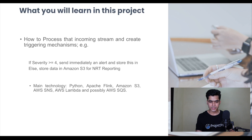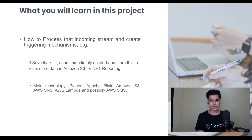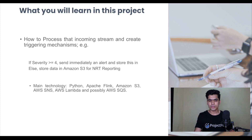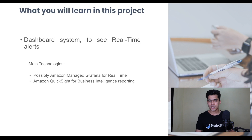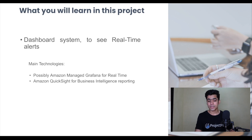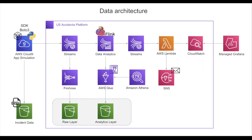S3 is an object store where you can store your data. AWS SNS is the Simple Notification Service — when something happens, you can get notifications by email or SMS. AWS Lambda is the event-based compute system where you write code that executes based on triggers or events. We may also use the Simple Queue Service. At the end, we want a dashboard for real-time and historical analysis, using Amazon Managed Kafka for real-time streaming and Amazon QuickSight for historical analysis.